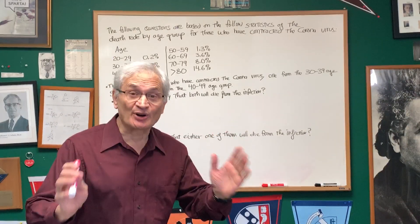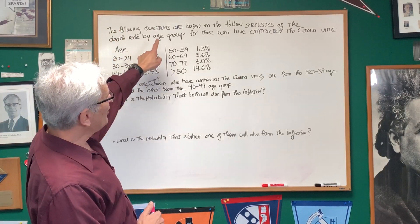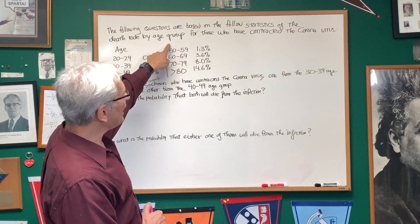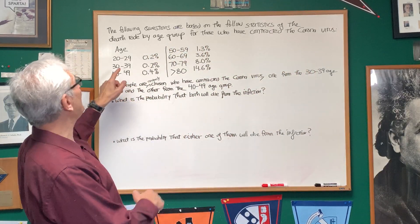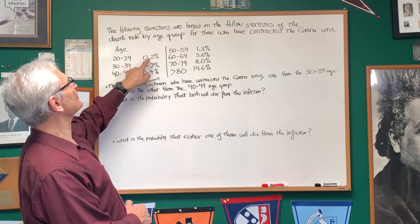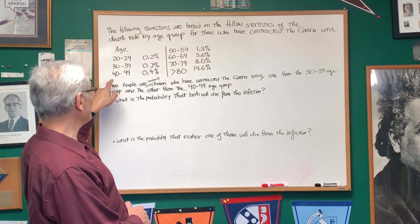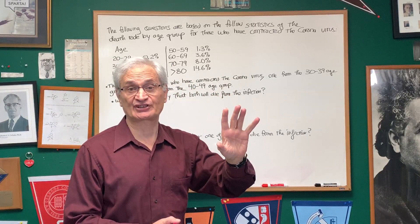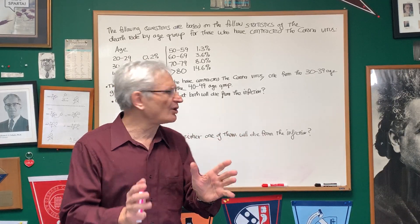Okay, the subject of the day is coronavirus. Let's read the preamble to the problem. The following questions are based on the following statistics of the death rate by age group for those who have contracted the coronavirus. And here we have it by age group: 20 to 29, 0.2%; age 30 to 39, 0.2%; age 40 to 49, 0.4%, etc. So this is not the percent of the death rate of the entire population, just those who have caught the coronavirus.